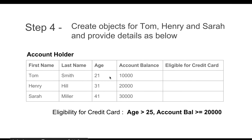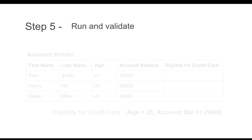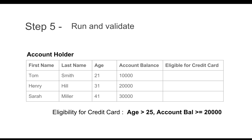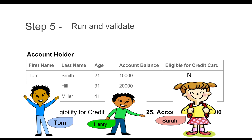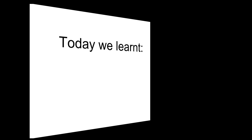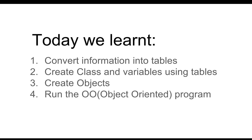So this is how we can convert our information to tables and then to classes and objects in Java. We have already run this program and validated it. We now know the eligibility for credit card — in the case of Tom it is no, in the case of Henry it is yes, and of course if we create an object for Sarah it will also come as yes. This is how you can think of object-oriented programming and move from real life to programming in Java to create objects and classes. I hope this information is very clear to you. I will meet you in the next session. Thanks for watching.